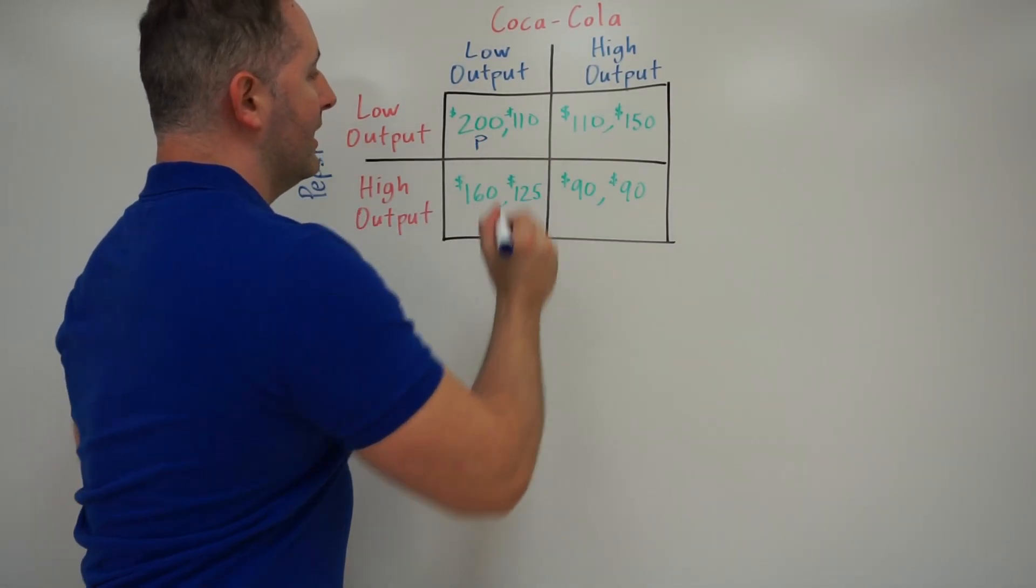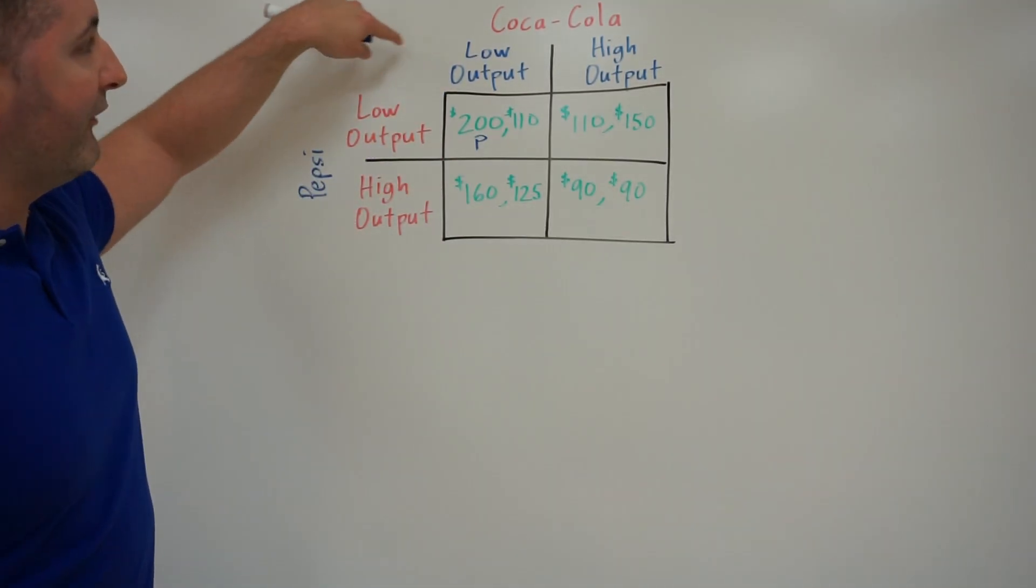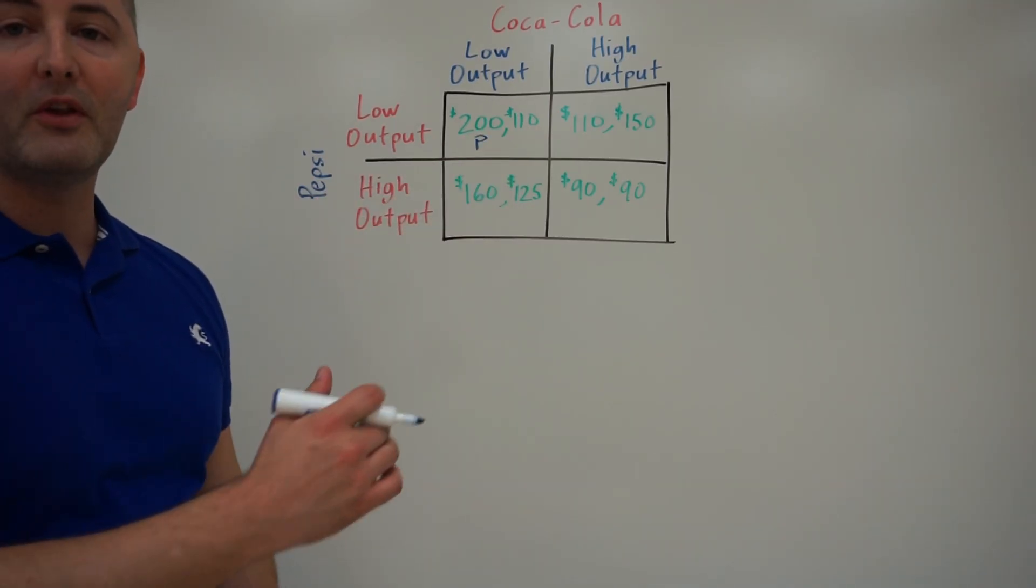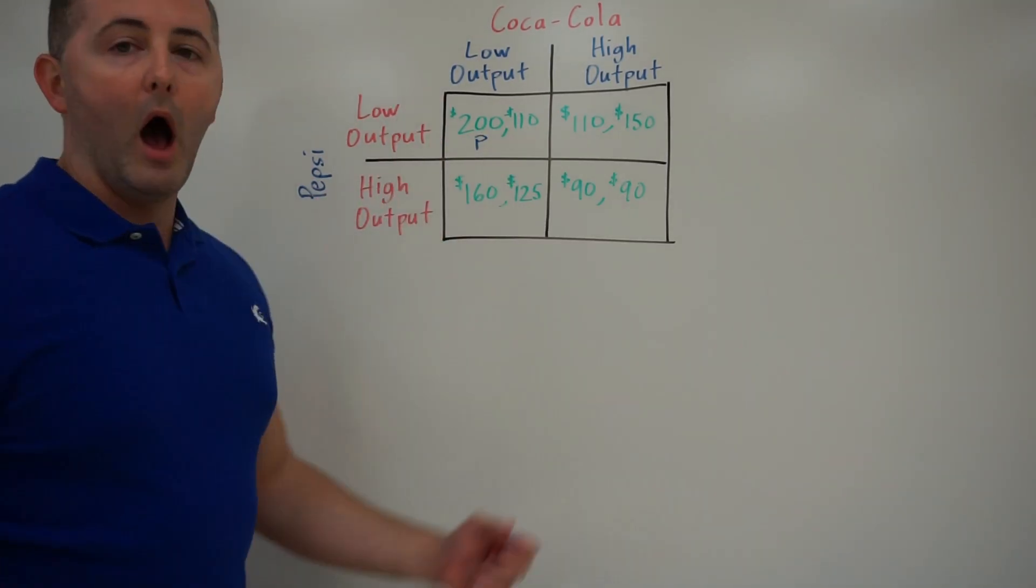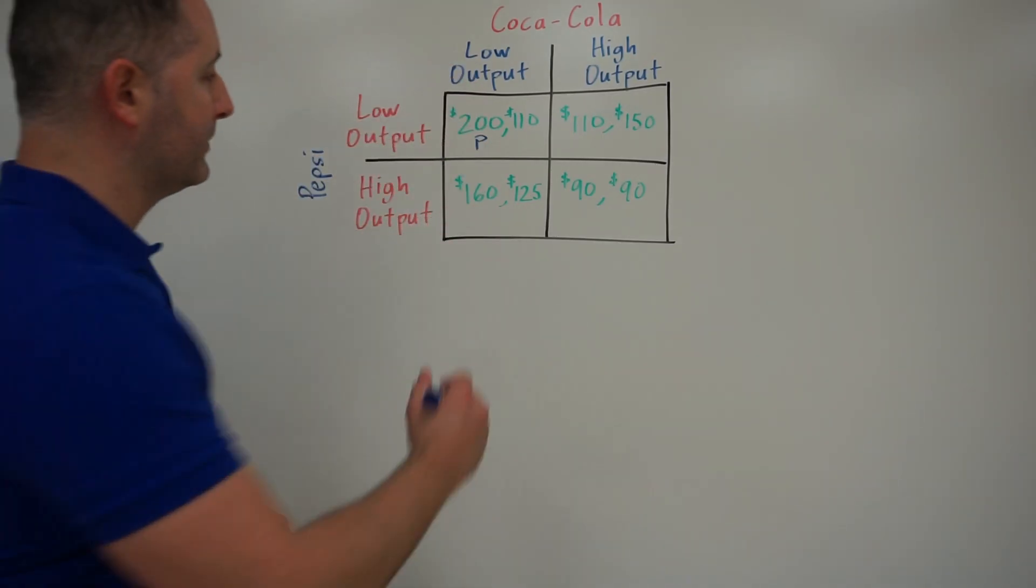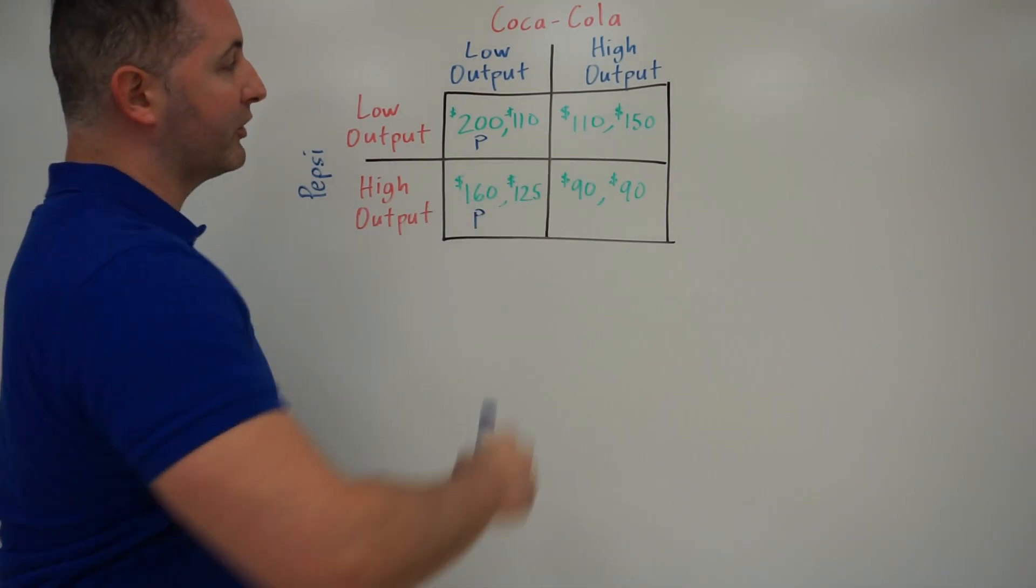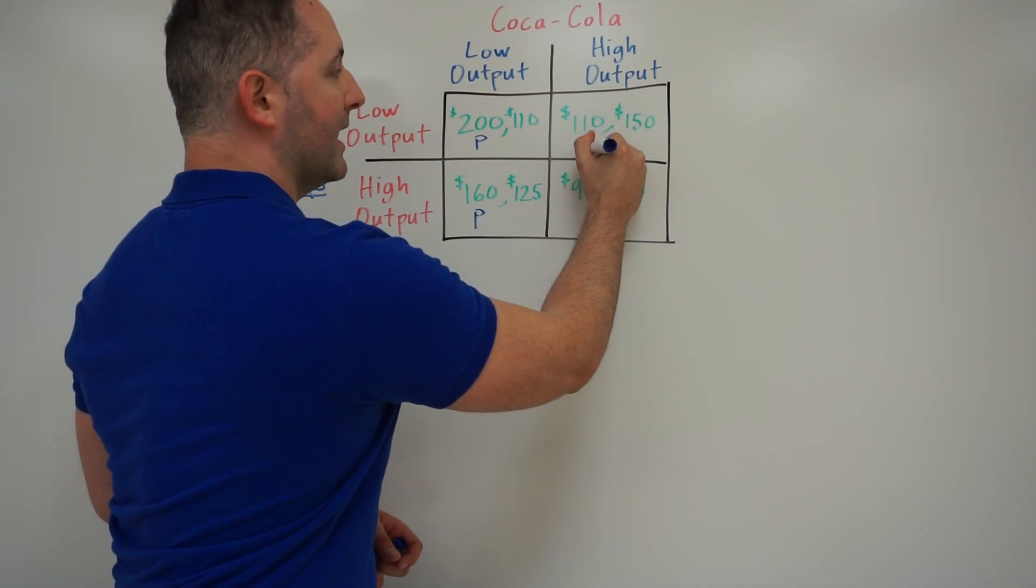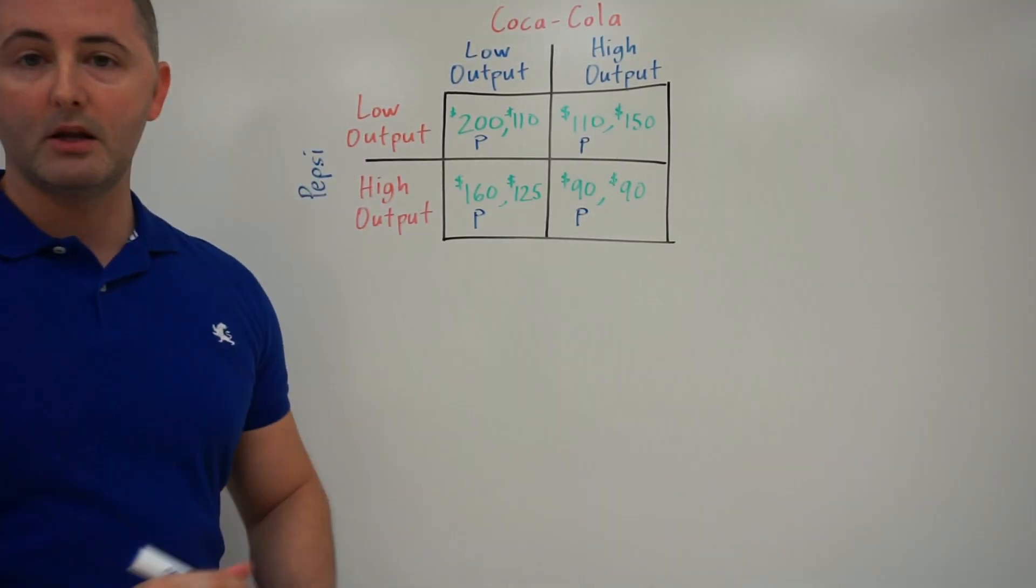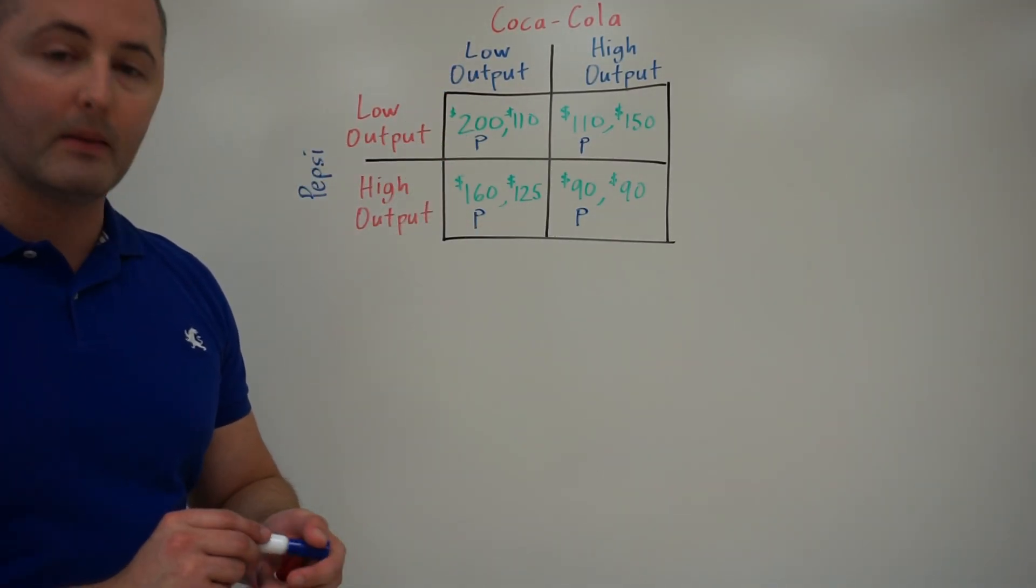This number $200, that is the amount Pepsi would earn. That would be Pepsi's profit if they both choose to do a low level of output. So the first number, the one on the left, that's always going to be the number of the horizontal axis. So that means if we drop down to this box with high output, that would be Pepsi with the $160. If we move over to the right side, Pepsi would be the first one again, they're always on the left. That's the $110. And Pepsi is the first $90 over here. So our horizontal axis is always the first number left to right in the box.